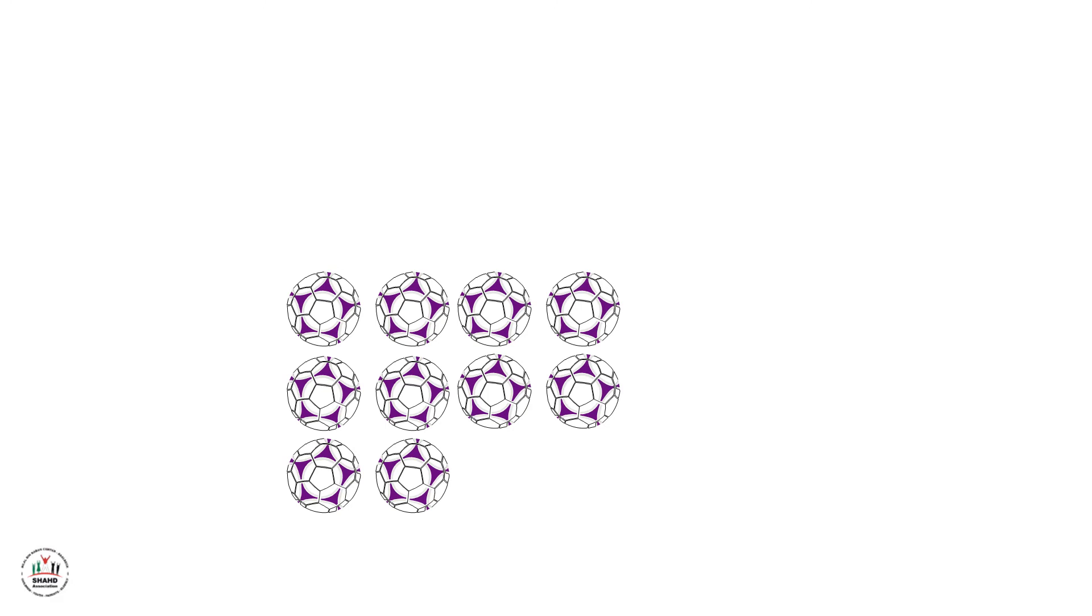Here we have one, two, three, four, five, six, seven, eight, nine, ten. We have ten balls. And I will take only two balls. So the number of balls will be eight. Eight balls. Then ten minus two is equal to eight.